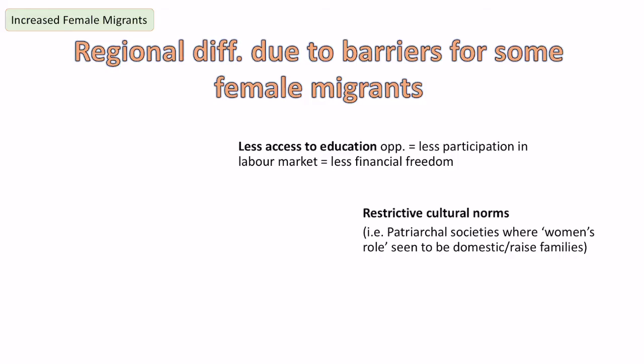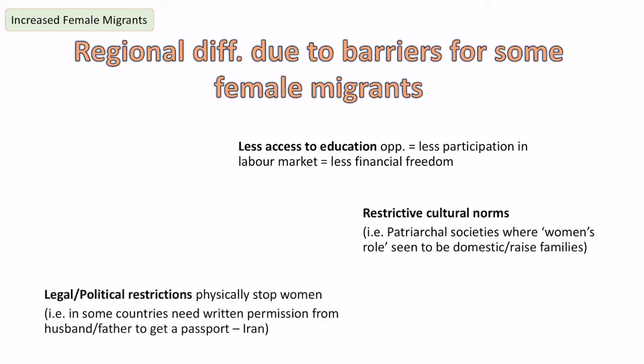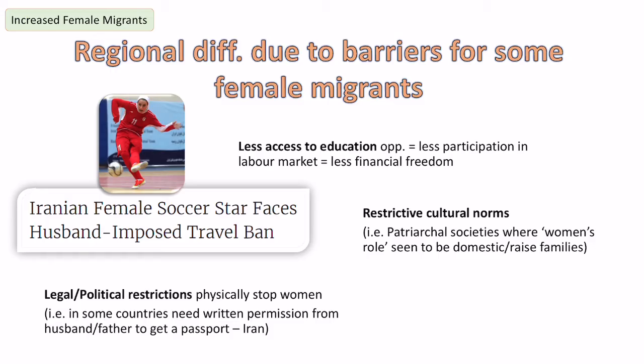There are still patriarchal societies with restrictive norms where women are seen as being there to be domestic and raise children — that's embedded in culture and takes a lot to shift. This can also affect legal and political restrictions. In some countries women physically can't leave the country unless they've been given permission from a male guardian. Iran is a good example: the captain of the Iranian women's football team wasn't allowed to play in a tournament overseas because her husband didn't sign approval for her passport.